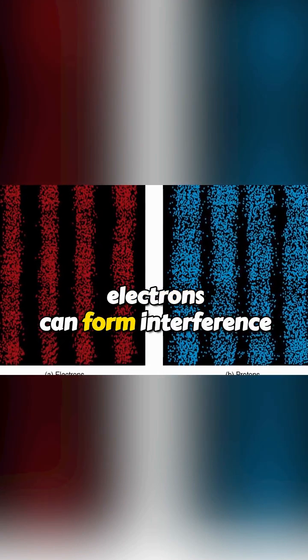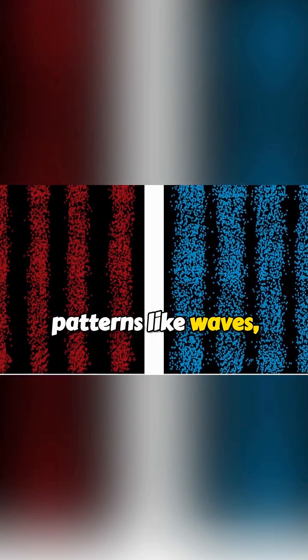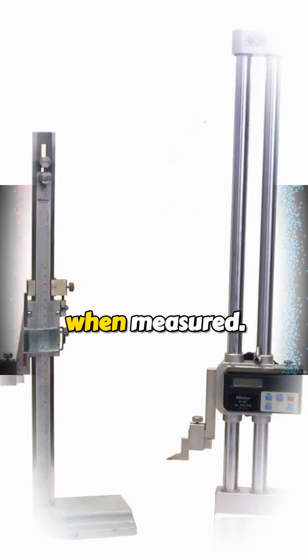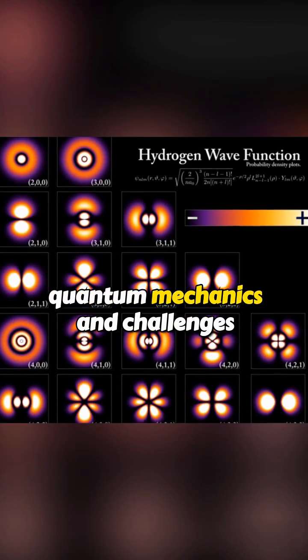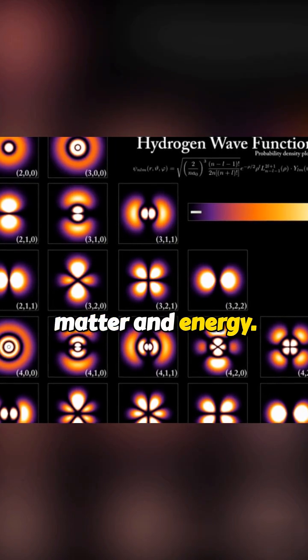For instance, electrons can form interference patterns like waves, yet behave as discrete particles when measured. This duality is a cornerstone of quantum mechanics and challenges traditional views of matter and energy.